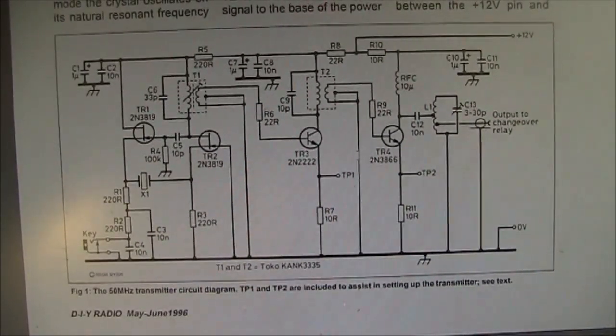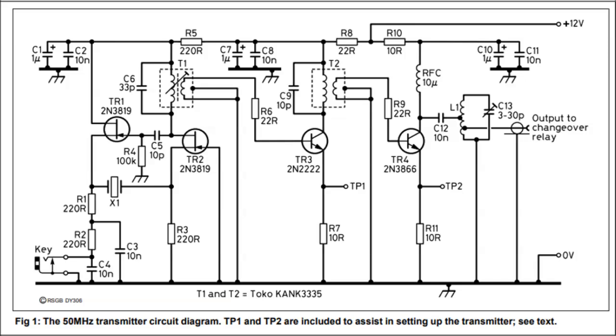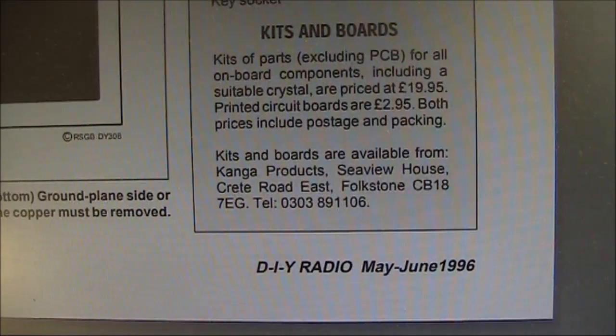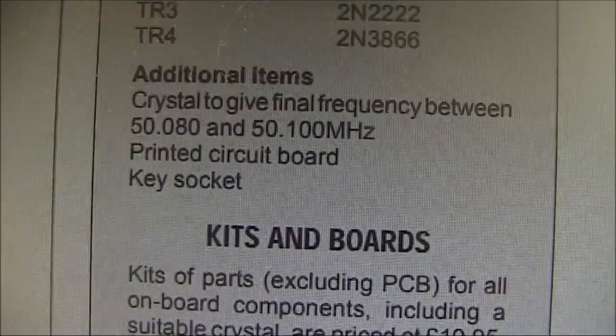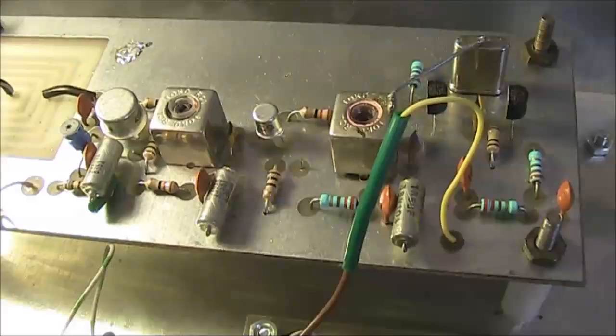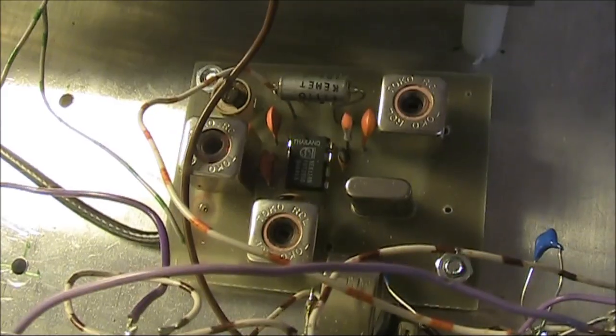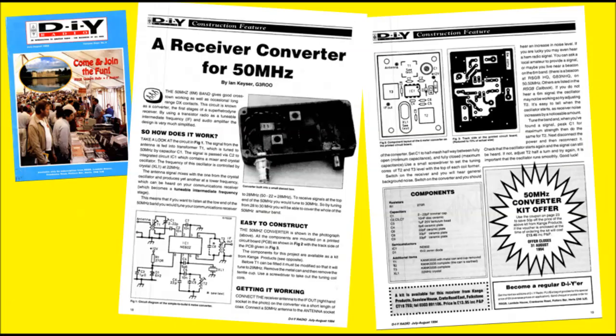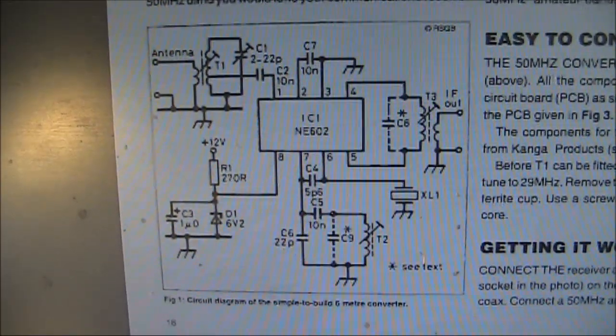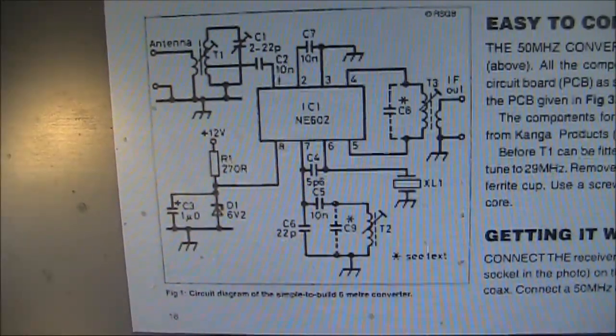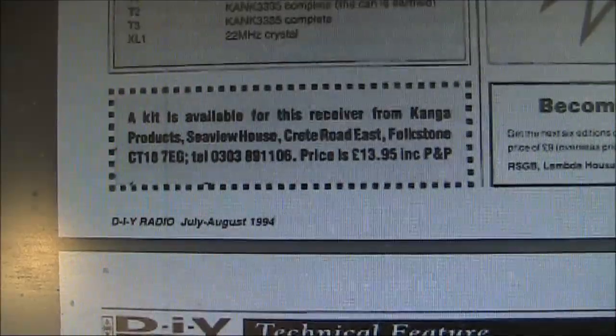This is a clearer version of the circuit. Kits and boards were available from Kanga Products in the UK. The crystal is specified here. That would have been the most expensive part of the project. Not only was the transmitter described, but also the converter in an earlier issue. I won't talk about the circuit much. It's a very basic, very common NE602 base design. It was also available as a kit from Kanga Products.